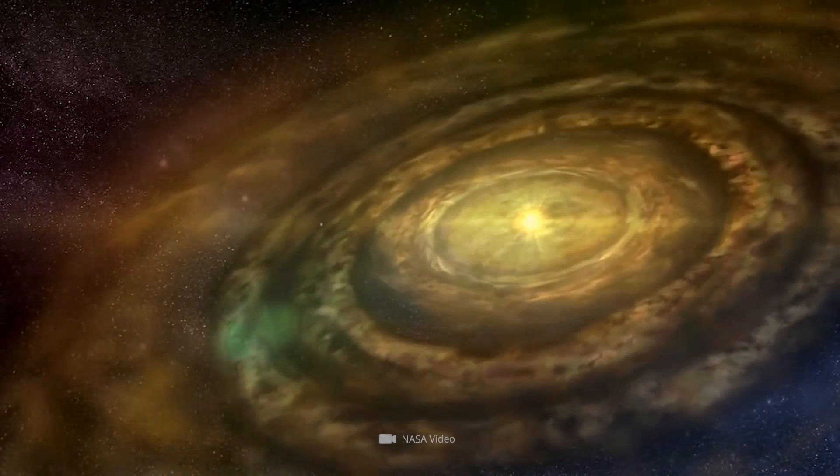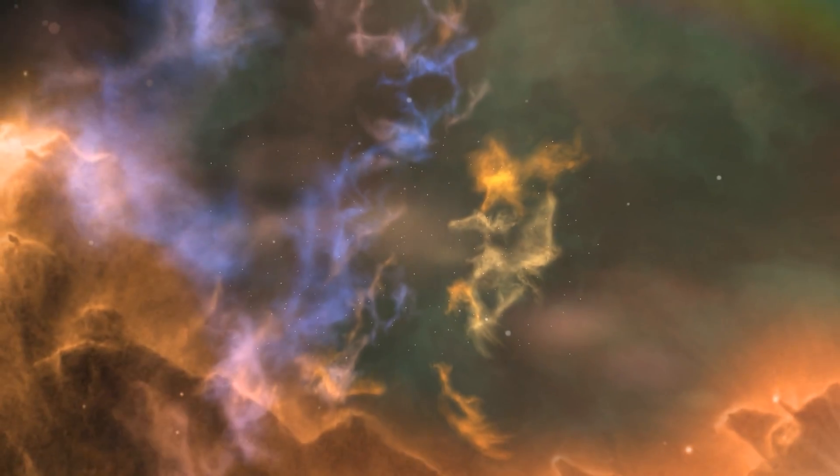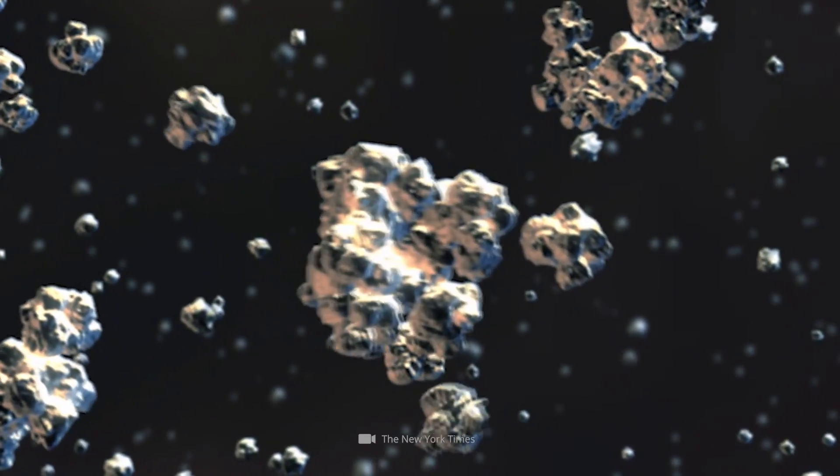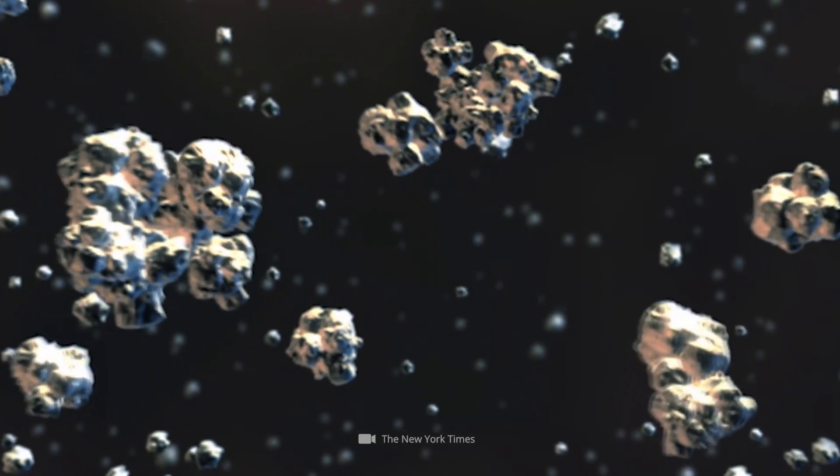Around the exoplanet PDS-70C is a circumplanetary disk. These annular clusters of matter, composed of gases, dust and debris, are considered significant reservoirs of material from which natural satellites can form.